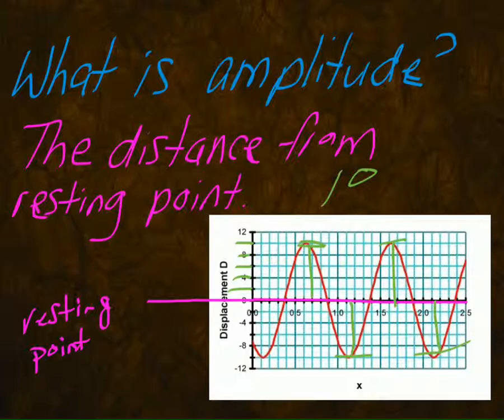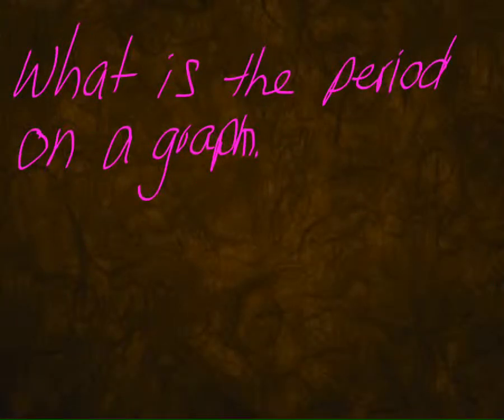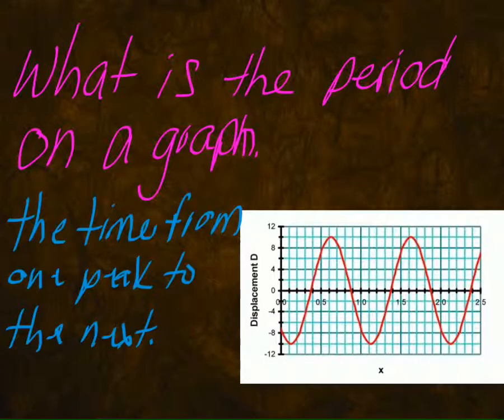All right, so now let's move on to what period is. So what does a period look like on a graph? Well, the period is the time from one peak to the next peak. So it would look kind of like this, from this peak to that peak. Or if I was to trace over, it would be from here to there.